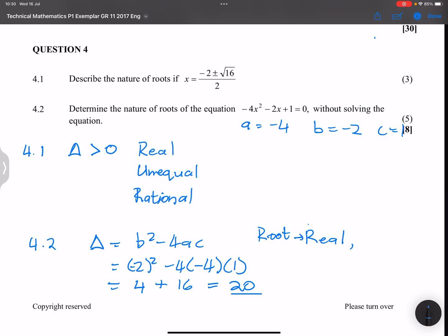Secondly, I know that they are unequal because delta is not equal to 0, and that is not a perfect square. 20 is not a perfect square, so my roots are irrational. It means that it will give us a surd. They are irrational. And ladies and gents, that is how the cookie crumbles. I'll see you guys again on the next one. For now, it's ciao and shop shop.